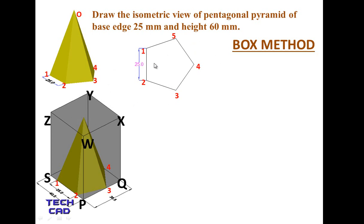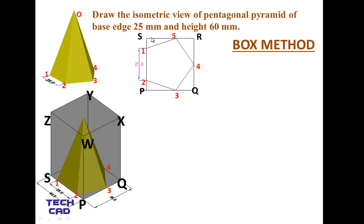First, make the orthographic top view of the box. This is the top view of the pentagonal pyramid, and now I'll draw the top view of the box. Extending the lines to complete the rectangle — from the top view you will see this rectangle PQRS only, which is the base of the box. The dimensions are 40.5 mm and 38.5 mm.